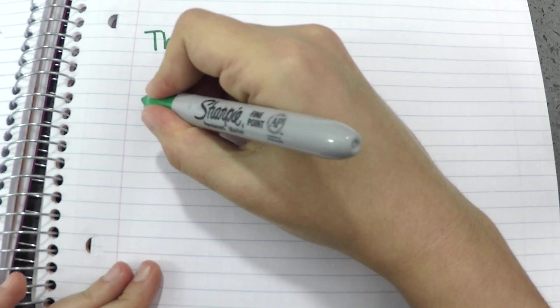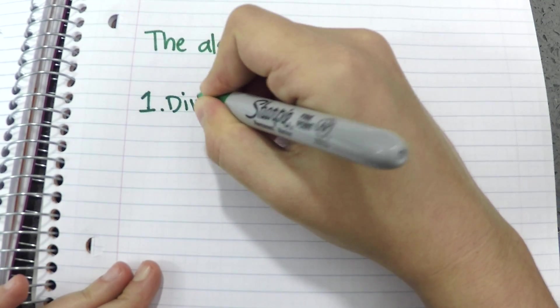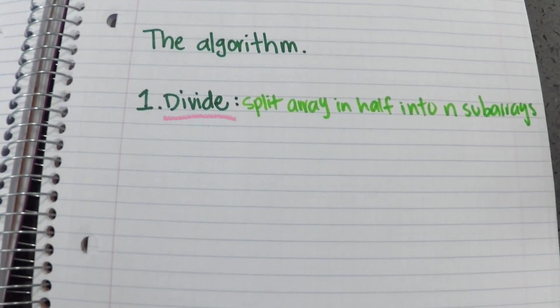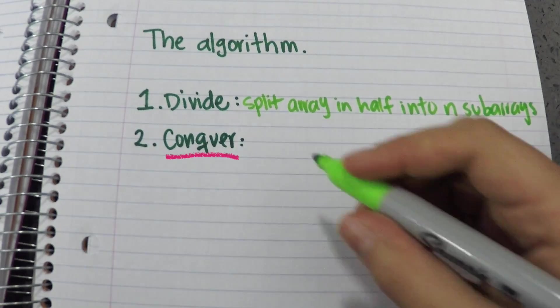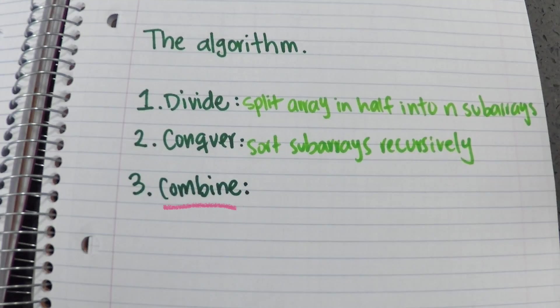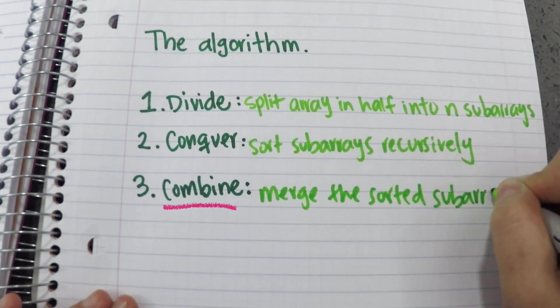To do Merge Sort, you need to divide by splitting the array in half recursively into n subarrays until each has one element, conquer by recursively sorting these subarrays, combine by merging the sorted subarrays until one is left.